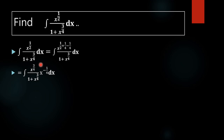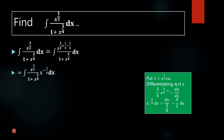Using that law, x raised to 3/4 plus minus 1/4 changes into x raised to 3/4 into x raised to minus 1/4. Now we are going to apply the substitution method. We put 1 plus x raised to 3/4 equal to u, because if we get something like u minus 1 over u, it will become easier for our integration.